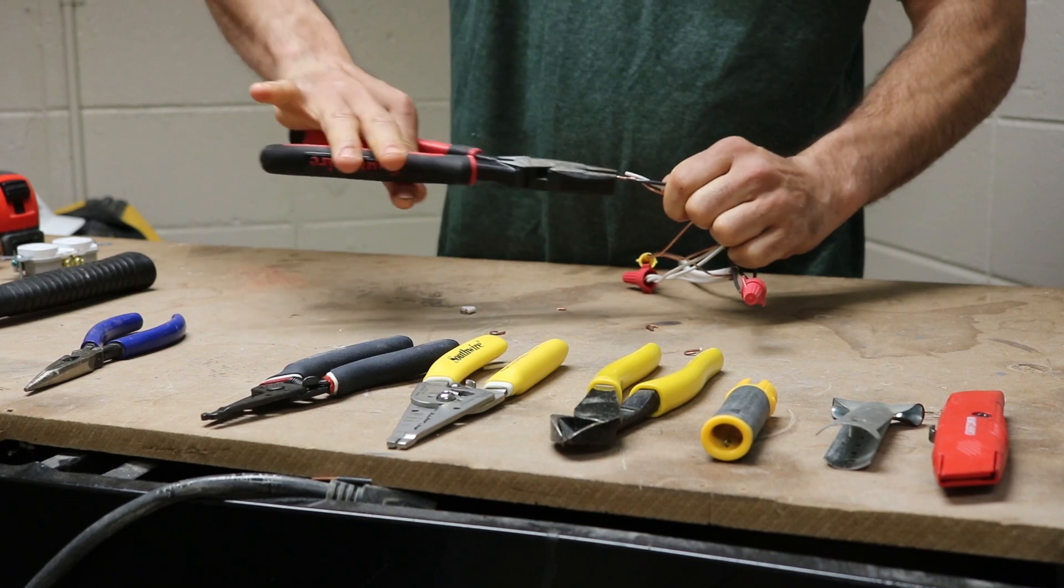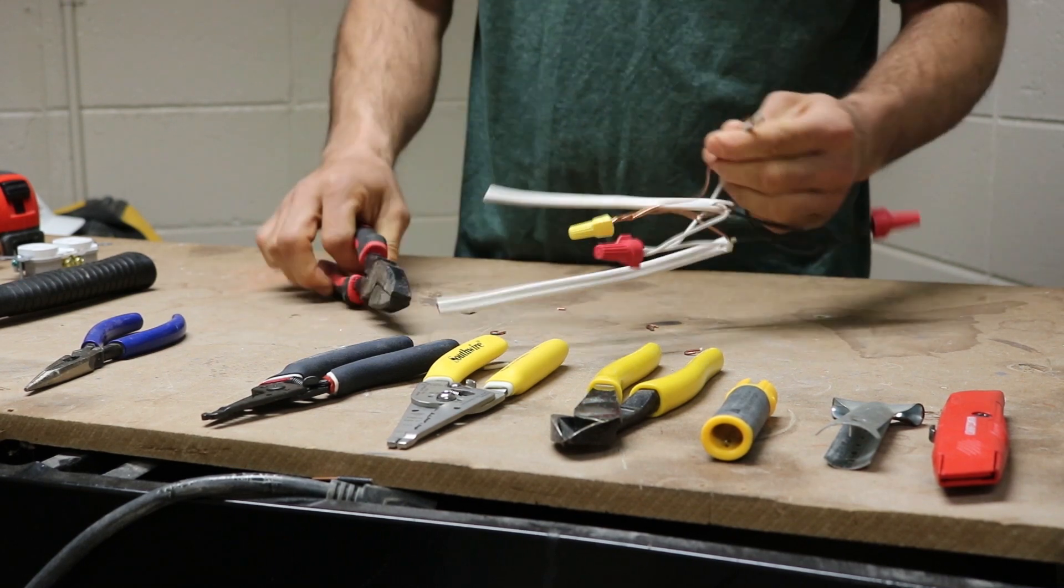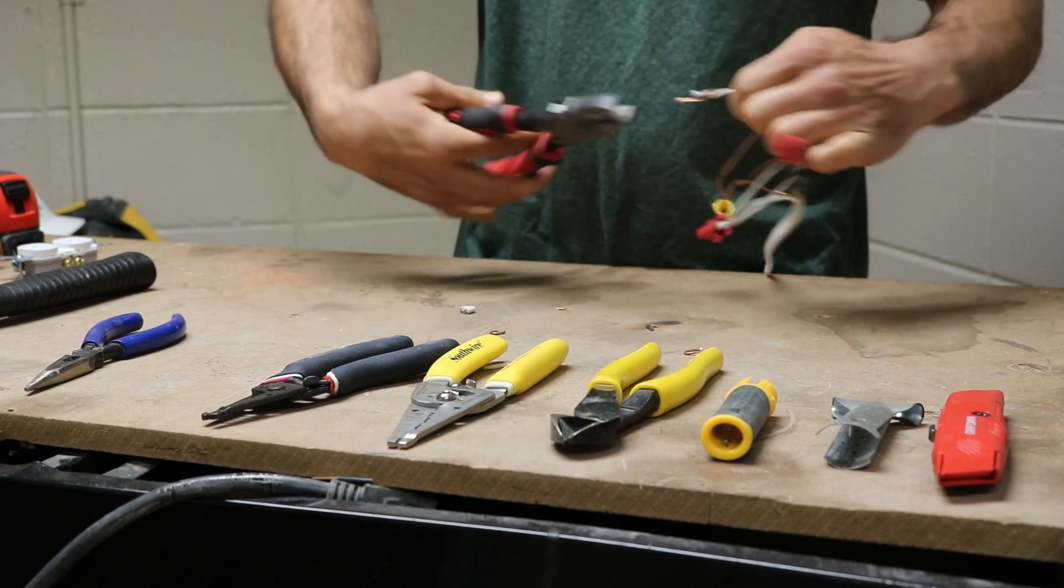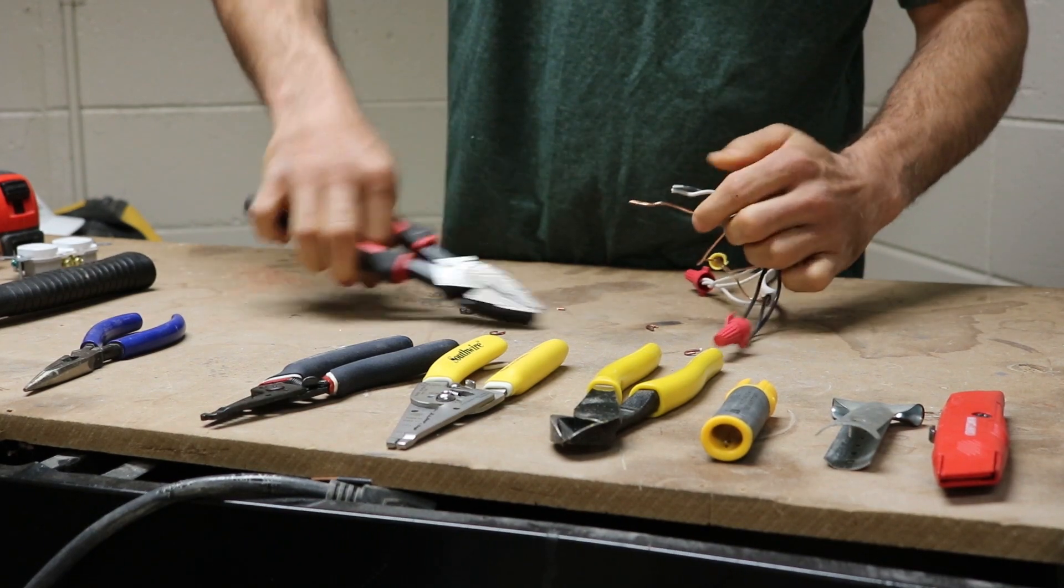Now, these are also called side cutters. So some people call them side cutters, some people call them lineman's. So you can make taps just like that with them. But there are many features with your lineman's pliers.